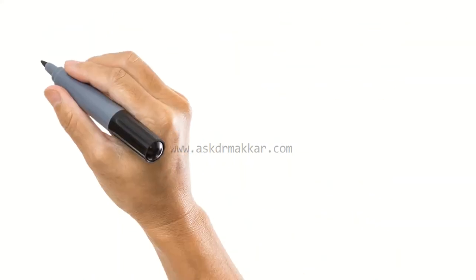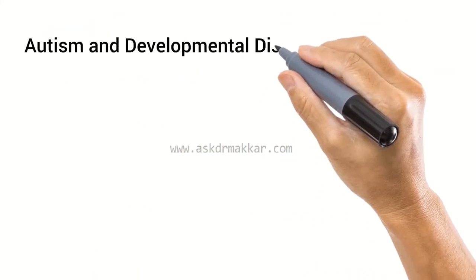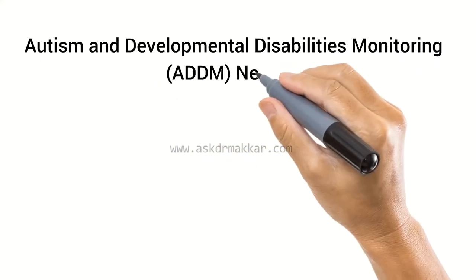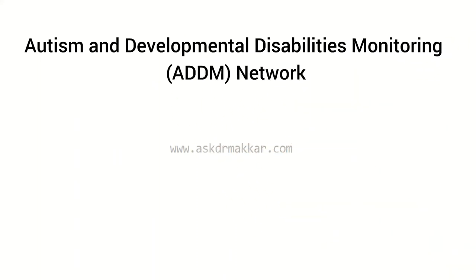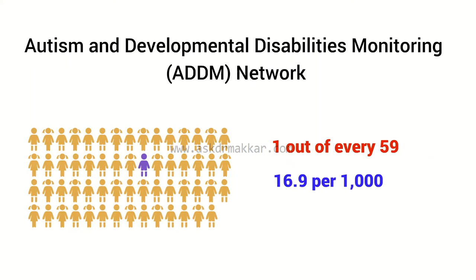The CDC's Autism and Developmental Disabilities Monitoring (ADDM) Network's most recent estimate is that one out of every 59 children, or 16.9 per 1,000, have some form of ASD as of 2014.